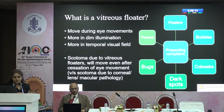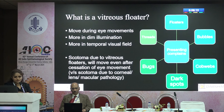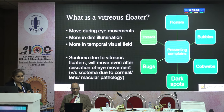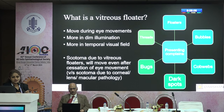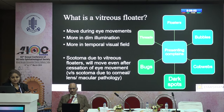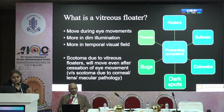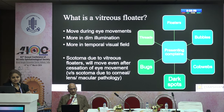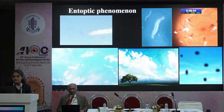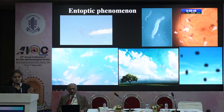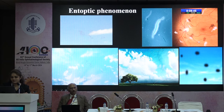Floaters are more seen in dim illumination and more in the temporal visual field. Floaters or scotomas due to vitreous floaters will move even after the cessation of eye movement, whereas a scotoma due to corneal, macular or lens pathology remains constant. Floaters cast a shadow on the retina which the patient sees in the visual field.